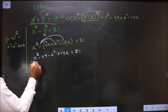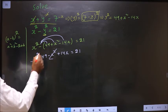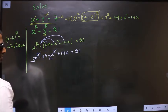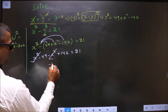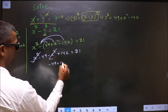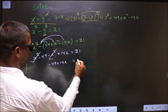Now here plus x square, here minus x square cancel out. So I am left with minus 49 plus 14x equal to 21.